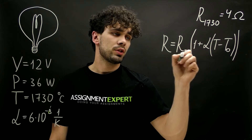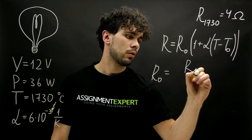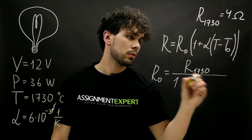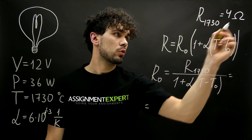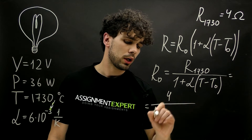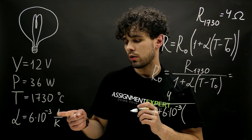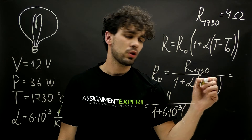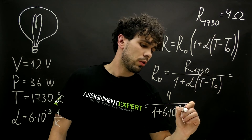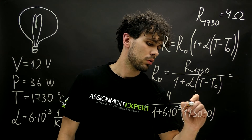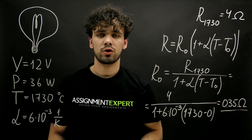Now let's find the resistance at zero degrees Celsius. R zero equals R at 1730 over one plus alpha times T minus T zero. This is equal to four over one plus six times ten to the negative third power — given in one over Kelvin. Since we have the difference of two temperatures, we can use either Celsius or Kelvin; the difference will be the same. So we take 730 minus zero, and this gives us 0.35 ohms — the resistance at the reference temperature zero degrees Celsius.